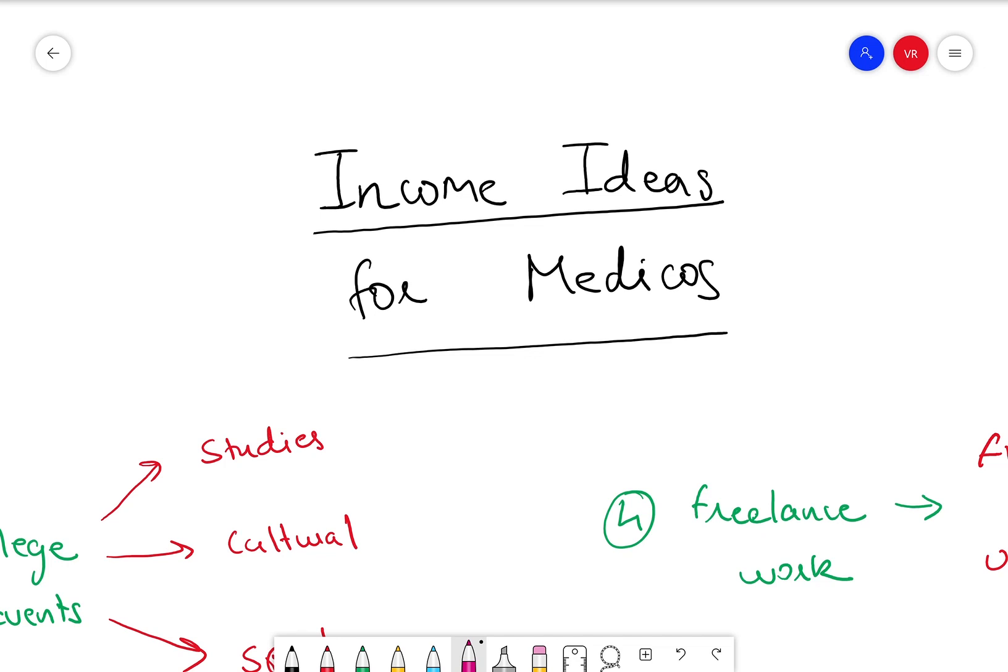Hi guys, we as medicos usually feel very poor. Like we would want extra 500 rupees to go out with our friends and have fun or maybe just eat something special. Sometimes when you run out of cash it's very hard for us to ask your parents for money because it's going to be a very long time for you to start earning.